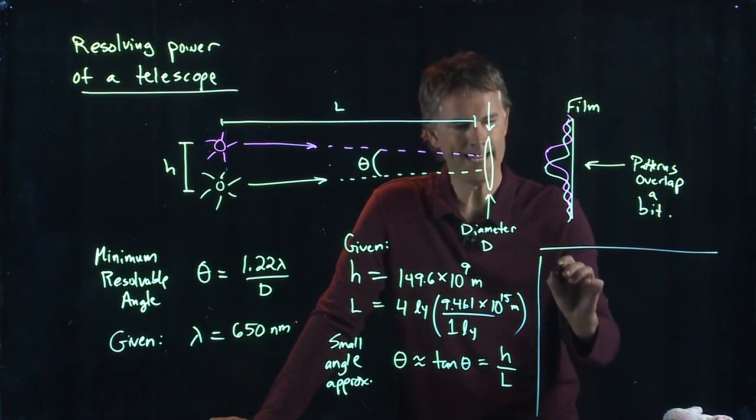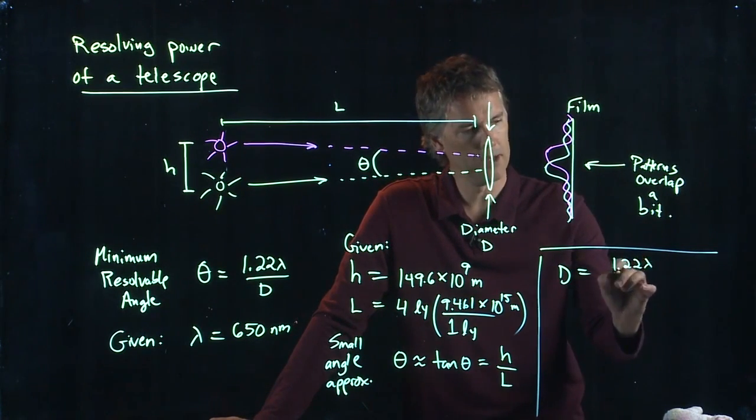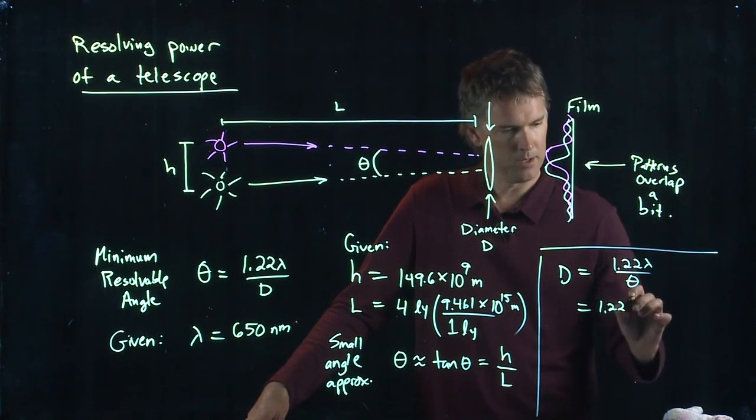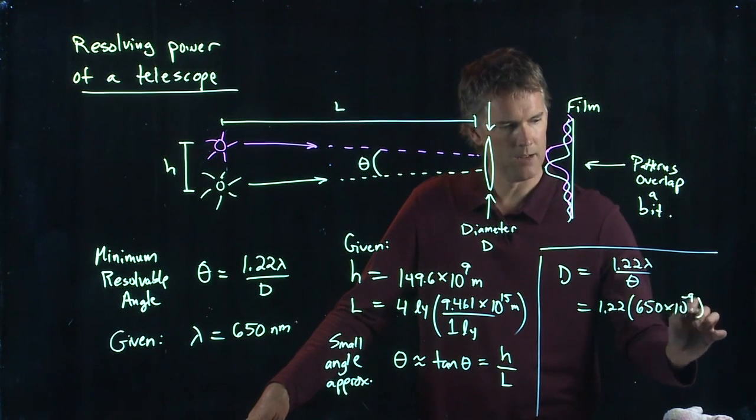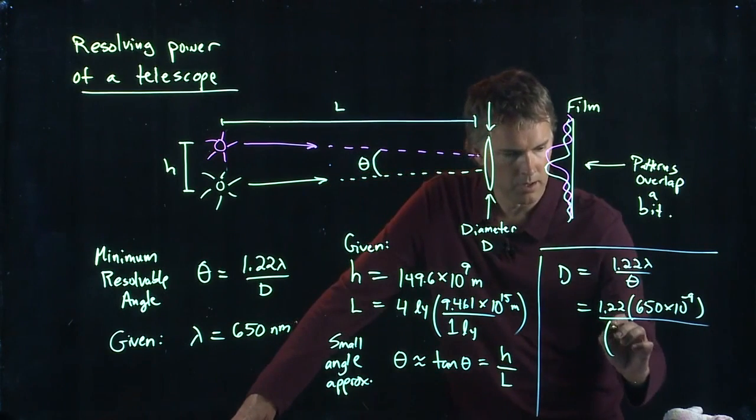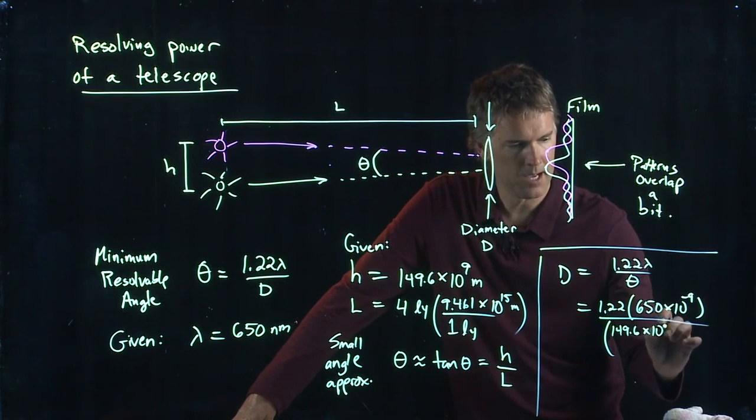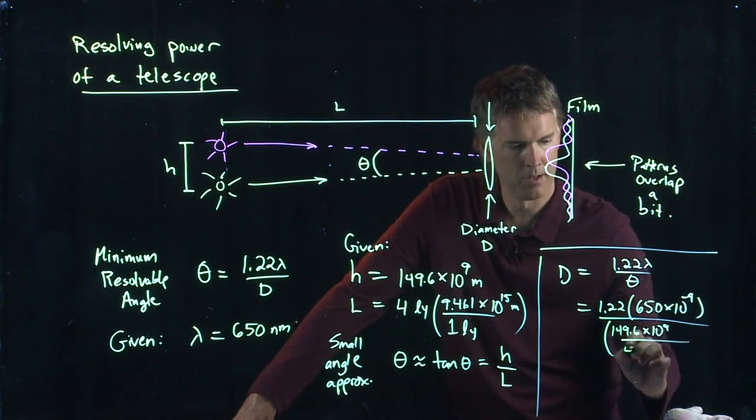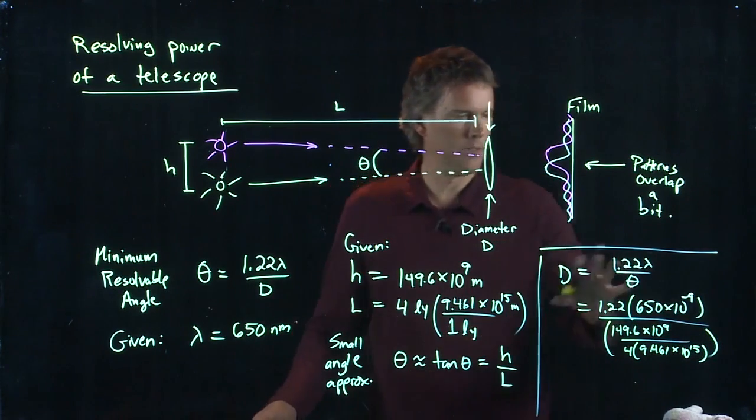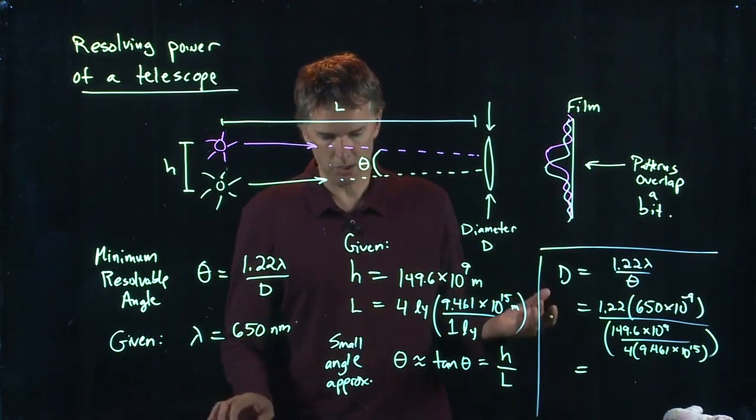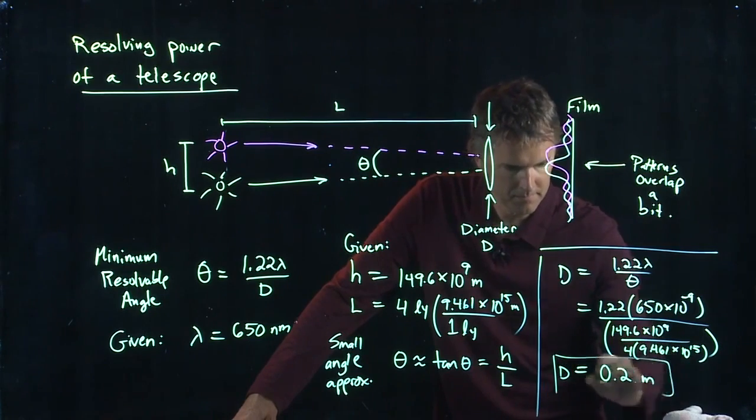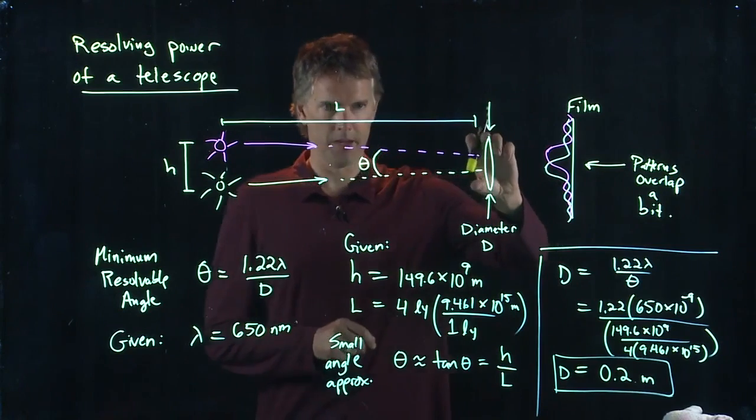Let's solve for D. D is equal to 1.22 lambda divided by theta. Just solving this equation for D. And now we have all these numbers: 1.22 times lambda, which is 650 times 10 to the minus 9 meters. That's nano. And then we have theta, but theta is just H over L. H is 149.6 times 10 to the 9 meters. L was 4 times 9.461 times 10 to the 15 meters. And all of this is in SI units, and so we're going to end up with a calculation in meters. And you can check it yourself, but I ended up with 0.2 meters. 20 centimeters for the diameter of this lens.